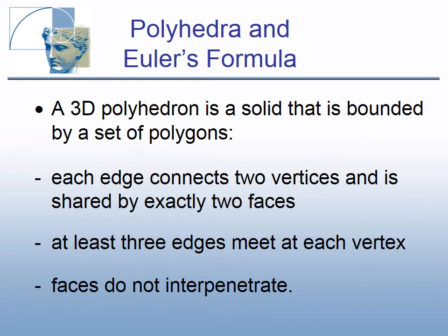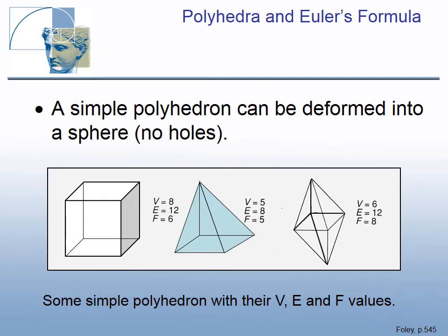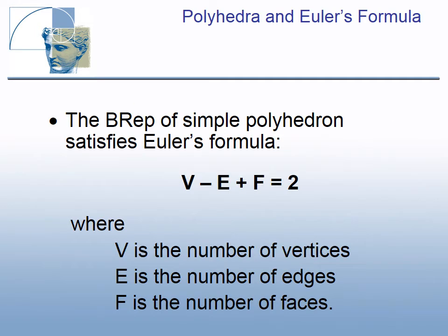Polyhedra are the simplest BREP objects. A 3D polyhedron is a solid bounded by a set of polygons. Each edge connects two vertices and is shared by exactly two faces. At least three edges meet at each vertex. Faces do not interpenetrate. A simple polyhedron can be deformed into a sphere as it has no holes. It is characterized by three numbers: V — number of vertices, E — number of edges, and F — number of faces. The variables of a simple polyhedron satisfy Euler's formula. For a cube: 8 vertices minus 12 edges plus 6 faces equals 2.